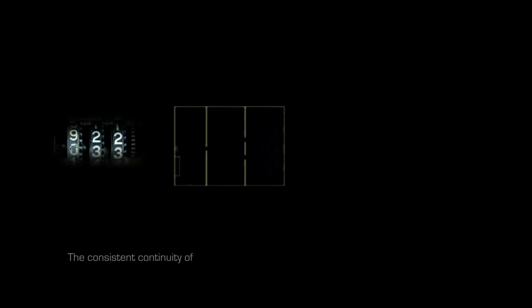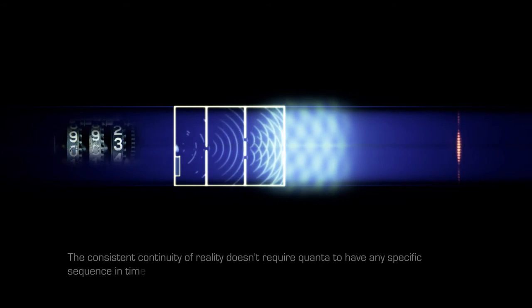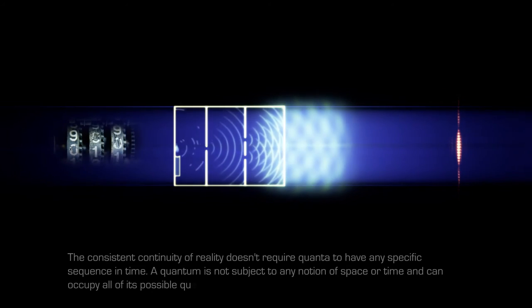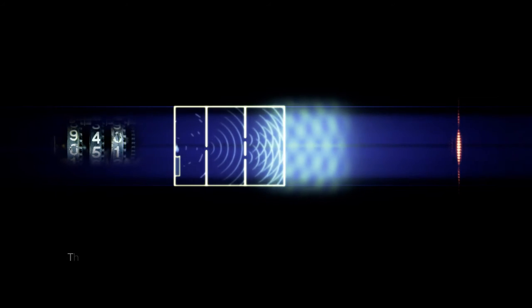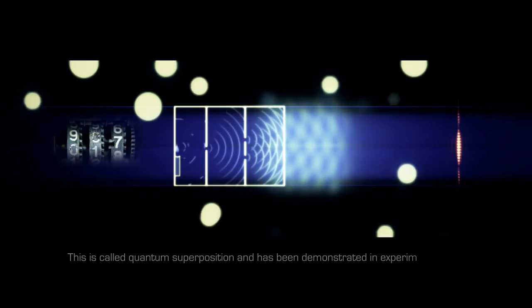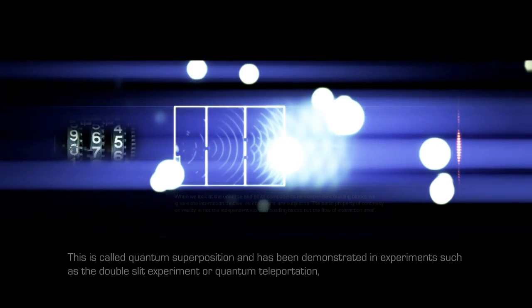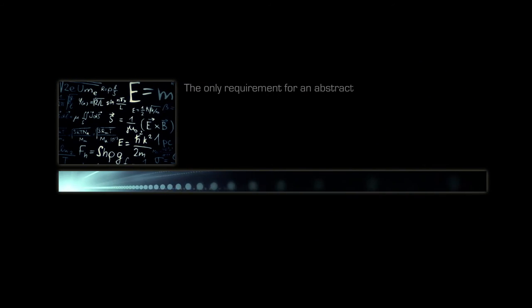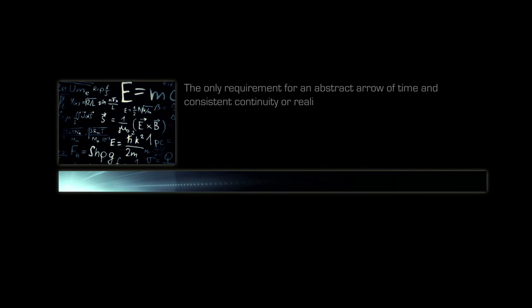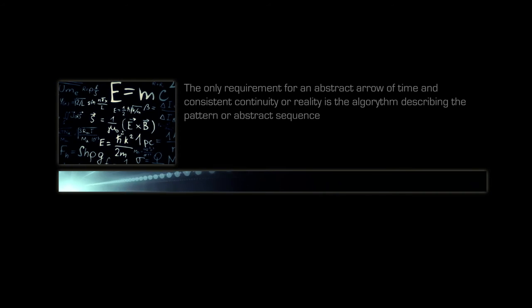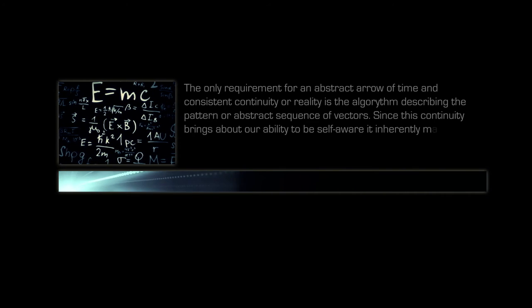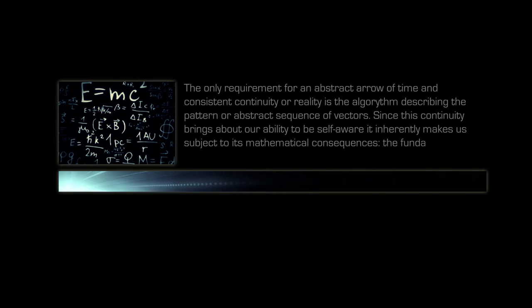The consistent continuity of reality does not require quanta to have any specific sequence in time. A quantum is not subject to any notion of space or time and can occupy all of its possible quantum states simultaneously. This is called quantum superposition and has been demonstrated in experiments such as the double-slit experiment or quantum teleportation where every electron in the universe, for example, could be the exact same one. The only requirement for an abstract arrow of time and consistent continuity or reality is the algorithm describing the pattern or abstract sequence of vectors. Since this continuity brings about our ability to be self-aware, it inherently makes us subject to its mathematical consequences, the fundamental laws of physics.